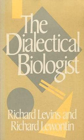The Dialectical Biologist is a 1985 book by Richard Levins and Richard Lewontin, in which the authors sketch a dialectical approach to biology. They see dialectics more as a set of questions to ask about biological research — a weapon against dogmatism — than as a set of predetermined answers.